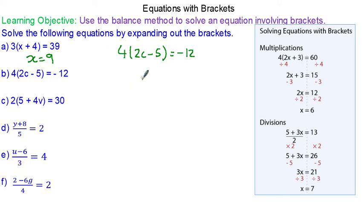So question B. Because 4 is a factor of negative 12, we can divide both sides by 4. So 2c minus 5 equals negative 3. We can add 5 to both sides. So 2c will equal 2 and divide both sides by 2. So c will equal 1.